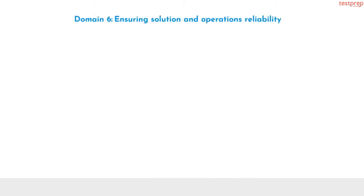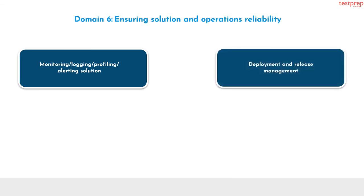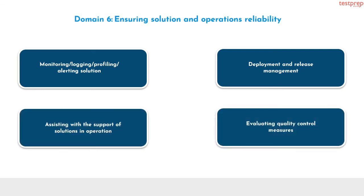Domain 6: ensuring solution and operations reliability. It contains: Number 1, monitoring, logging, profiling, alerting solution; Number 2, deployment and release management; Number 3, assisting with the support of solutions in operation; Number 4, evaluating quality control measures.